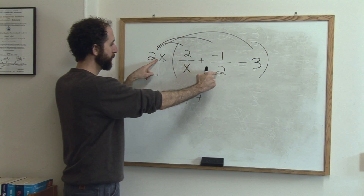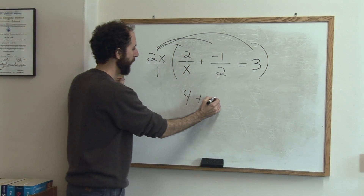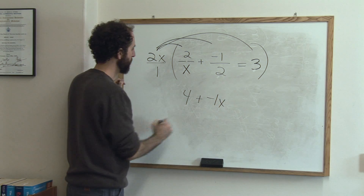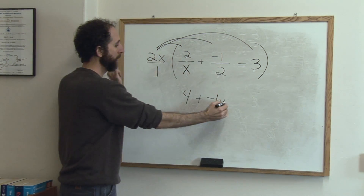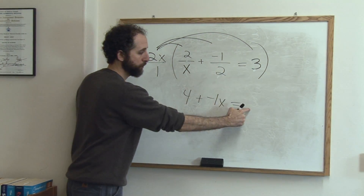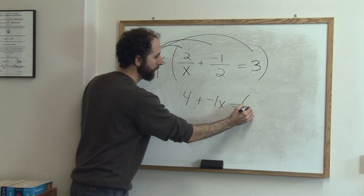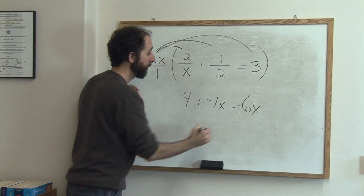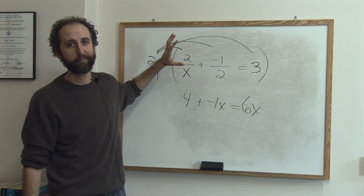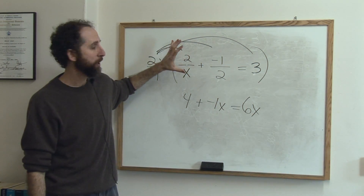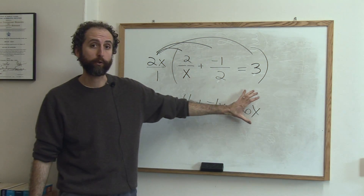2x times negative 1 over 2: the 2's are going to cancel, leaving negative 1x. x times negative 1 is negative 1x. Equals — and a lot of people just put 3, but you've got to remember to multiply — 2x times 3 is 6x. And now we've turned this rational equation into a simple algebraic equation.